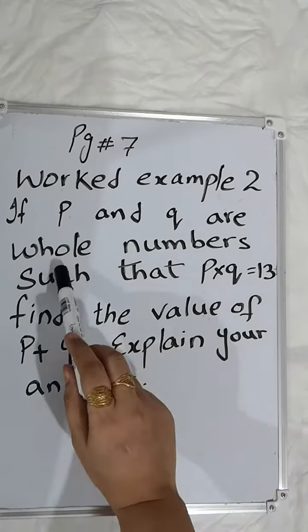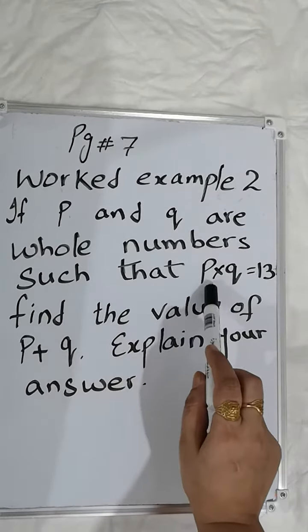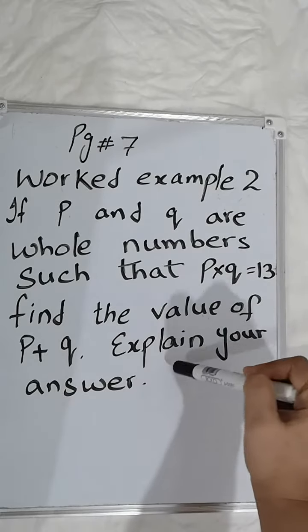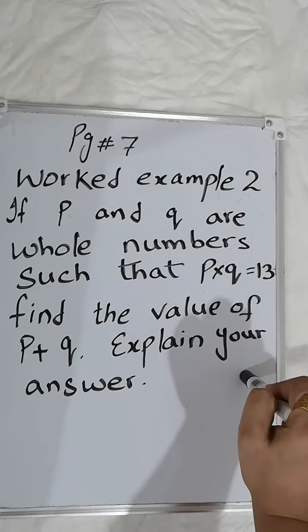If P and Q are whole numbers such that P multiplied by Q is equal to 13, find the value of P plus Q and explain your answer.